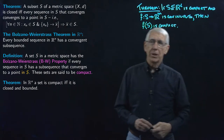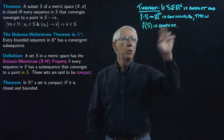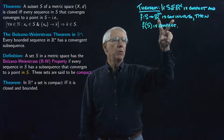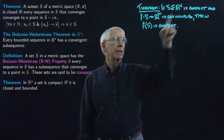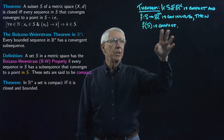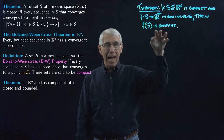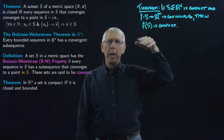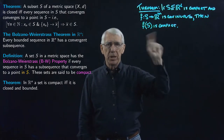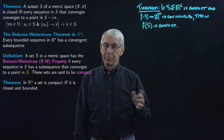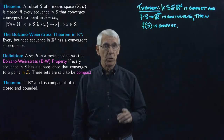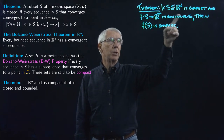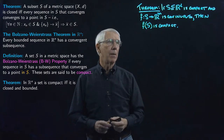We actually say that continuous functions preserve compactness. That is, a continuous function takes a compact set in one space and maps it into a set that will be compact in the target space. That's a simple way of remembering the theorem. Continuous functions actually preserve a number of other properties too, which we will see. Continuous functions preserve compactness — they take compact sets to compact sets.